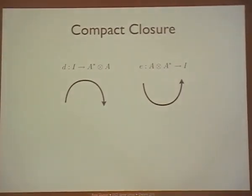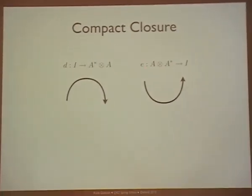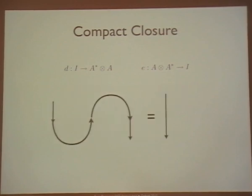Yesterday James was talking about duals. The kinds of categories that have duals in them are compact categories. Each object has a dual object — denoted with a star — which is both a left and right dual. The main properties: we have maps η and ε which can produce a pair (A* and A) from nothing, and consume a pair (A and A*) to produce nothing. If I compose them appropriately I get the identity, so my lines are stretchable and bendable.